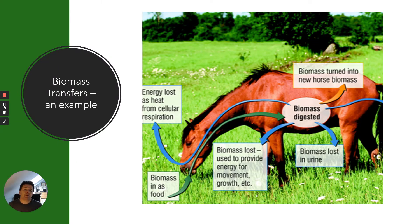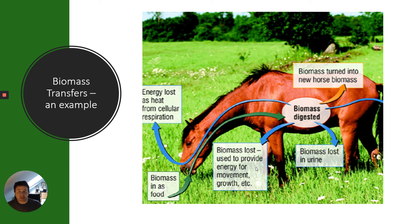Here's an example using a horse. The horse eats the producer — grass in this case — and it's digested. Only about 10% of the biomass is going to be turned into horse biomass; the rest is lost or transferred. Biomass can be lost in urine and faeces, it can be used to provide energy for movement, growth, and maintaining heat, and energy is also lost as heat from cellular respiration. There are many ways biomass isn't converted into the animal's own biomass.